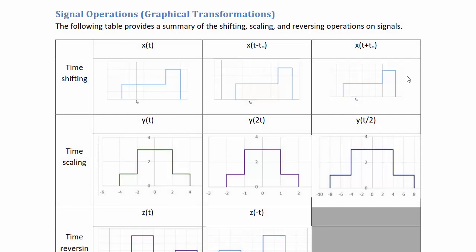Signal Operations: Graphical Transformations. The following table provides a summary of the shifting, scaling, and reversing operations on signals. For time shifting, given x(t) with t₀, if we plot x(t − t₀) and t₀ is greater than zero, this represents a shift to the right. If we plot x(t + t₀) with t₀ greater than zero, this represents a shift to the left.